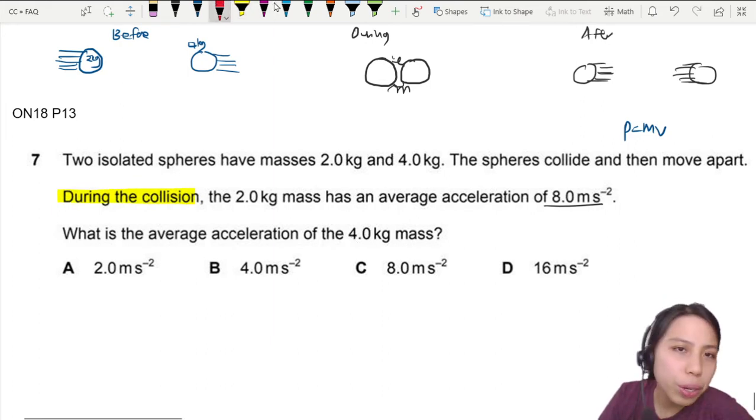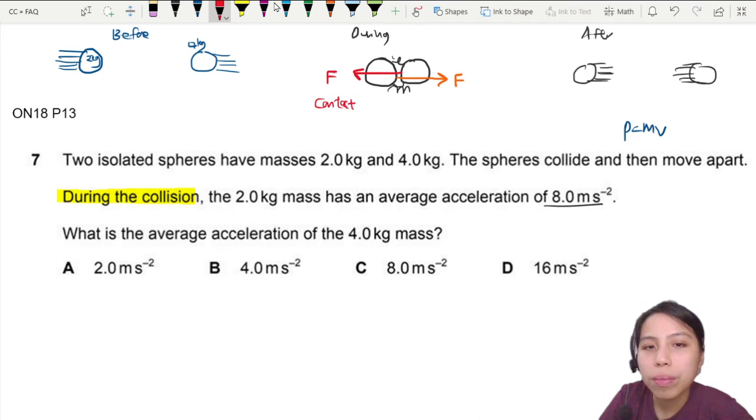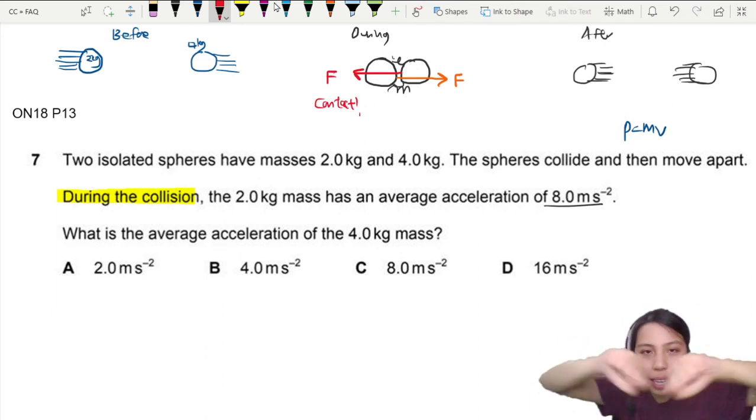During collision, the first ball is actually going to push on the second ball. I push you, you push me, and this one push the other one. These are two forces that we call Newton's third law pair. These are contact forces. Only happens when you have contact. So during collision, you hit each other.